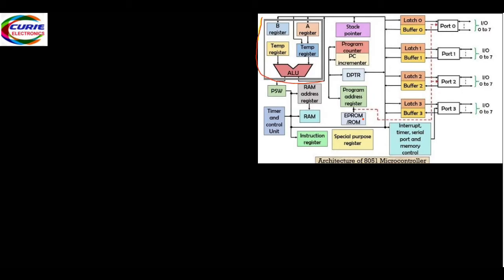Let's see first what are the CPU registers. This is the ALU, this is the CPU. And if you see there, we have CPU registers. We also have temporary registers, which are used by the CPU for processing the data.